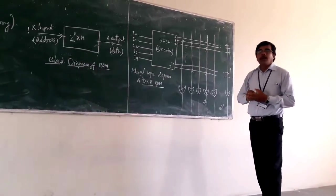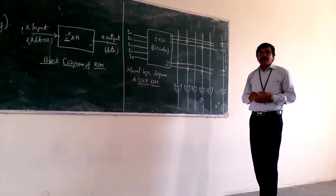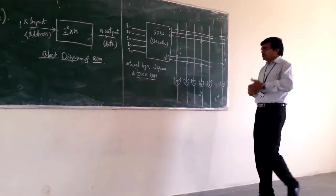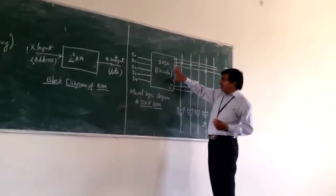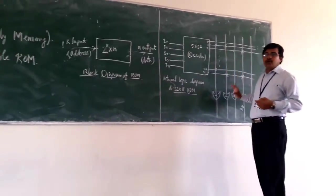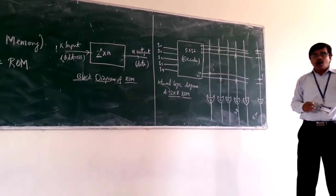Suppose if you are seeing your internal structure, you are having basically two components: you are having the AND gate and OR gate.